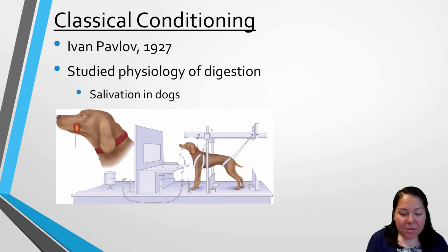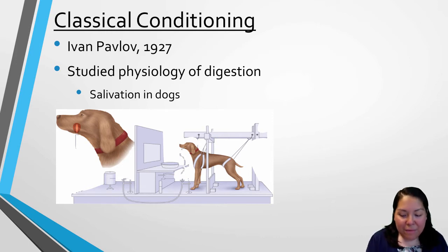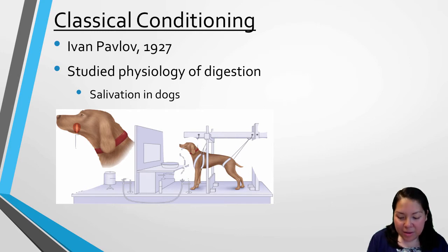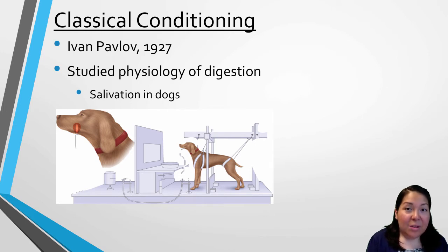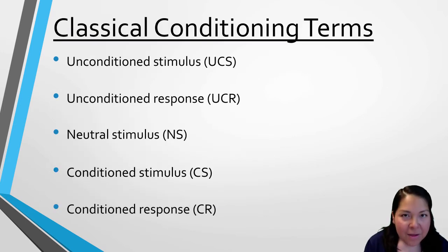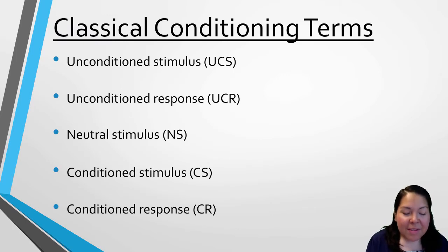Pavlov took his observations further and started pairing or ringing a bell every time he presented food to the dogs. After repeated trials of pairing the bell with the presentation of food, he found that if he only rang the bell without presenting food, the dogs would start to salivate. Using the example of Pavlov's dogs, I will now explain classical conditioning terms.